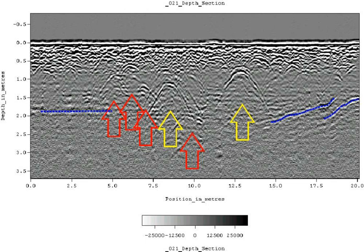A GPR transmitter and antenna emits electromagnetic energy into the ground. When the energy encounters a buried object or a boundary between materials having different permittivities, it may be reflected or refracted or scattered back to the surface. A receiving antenna can then record the variations in the return signal.